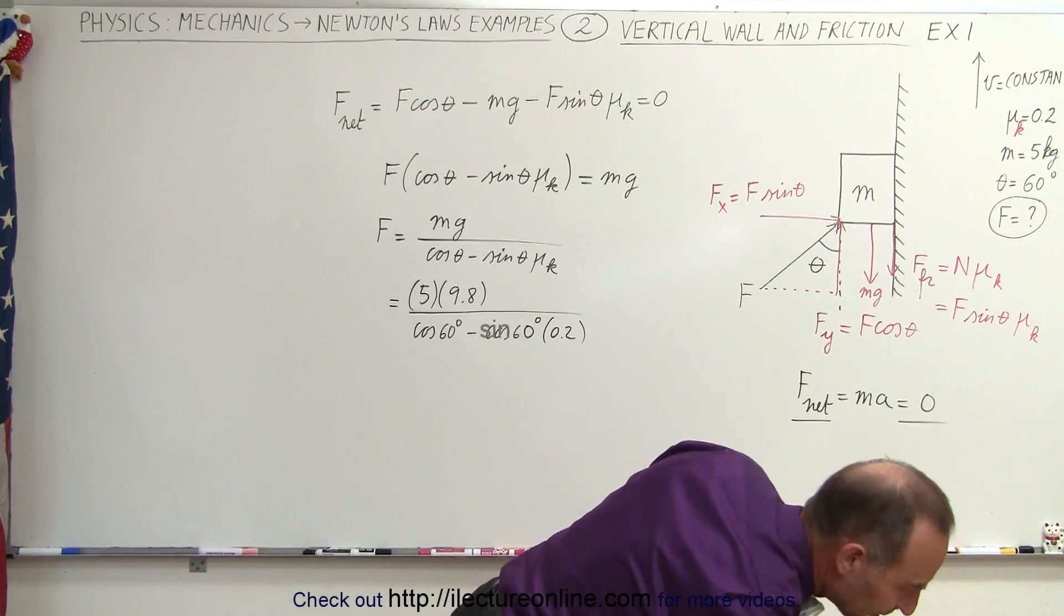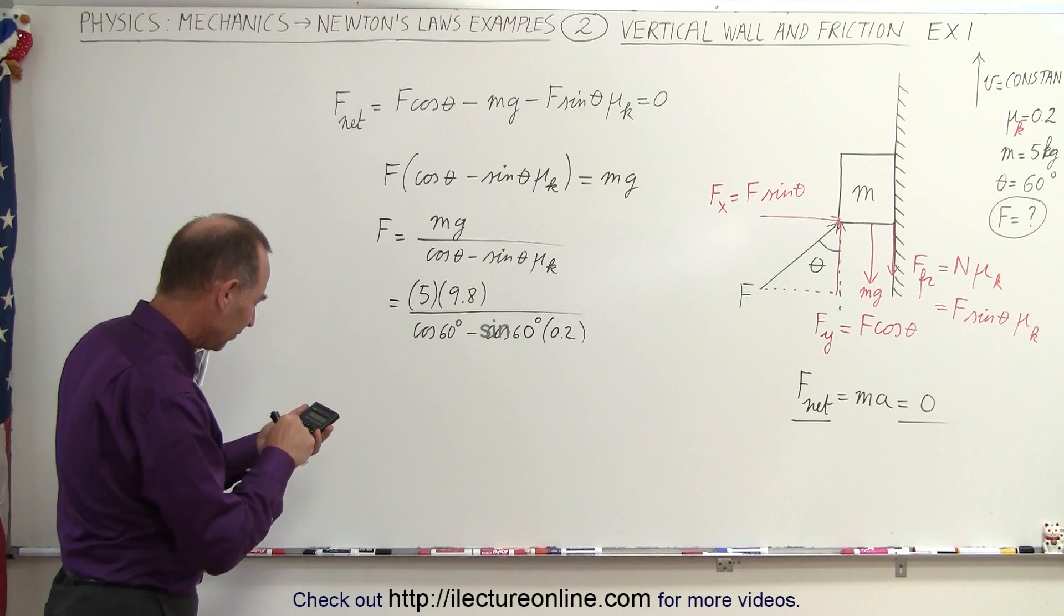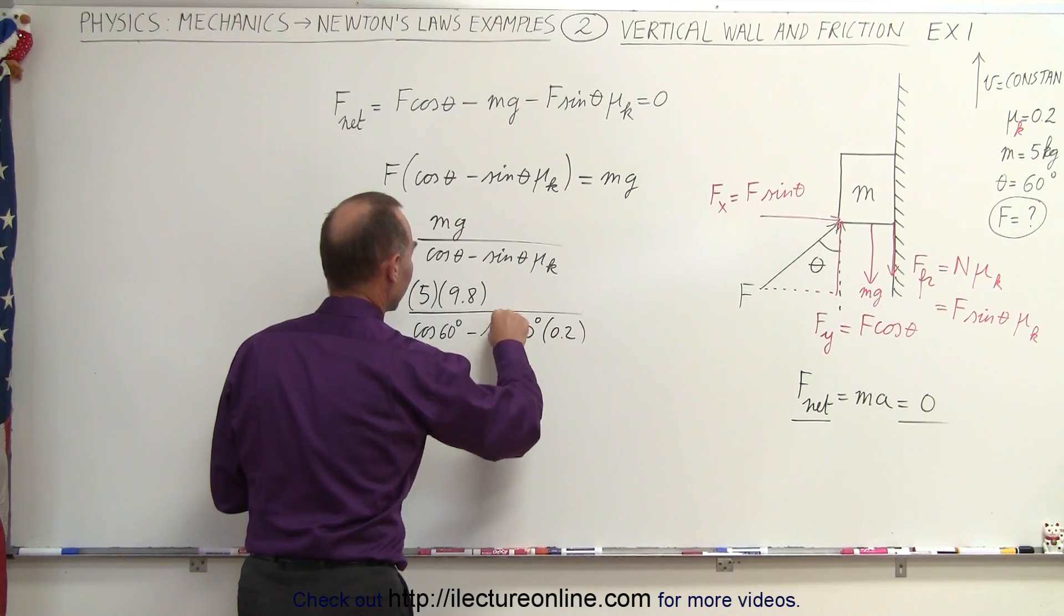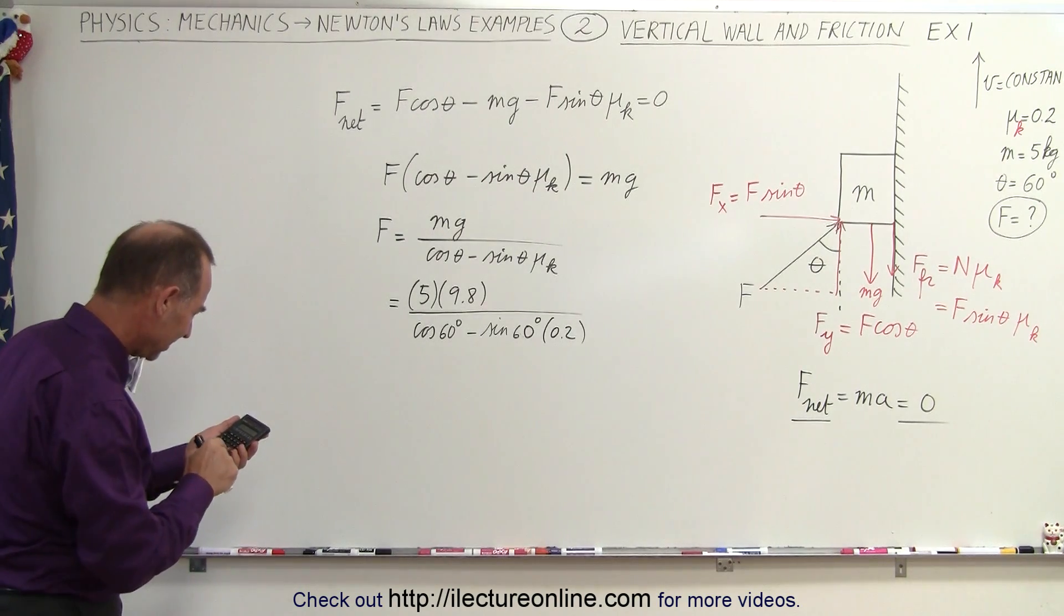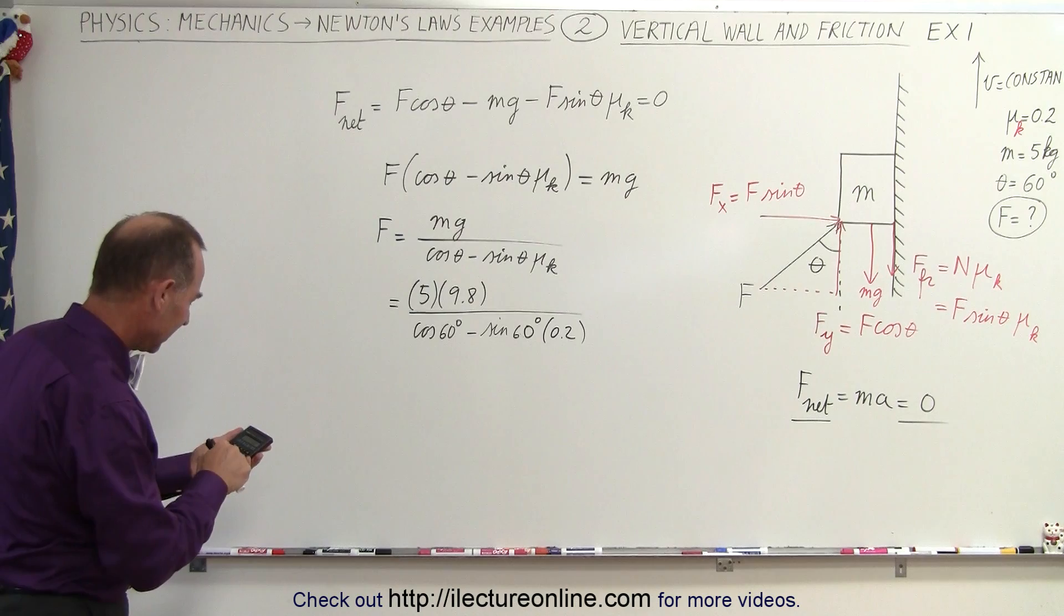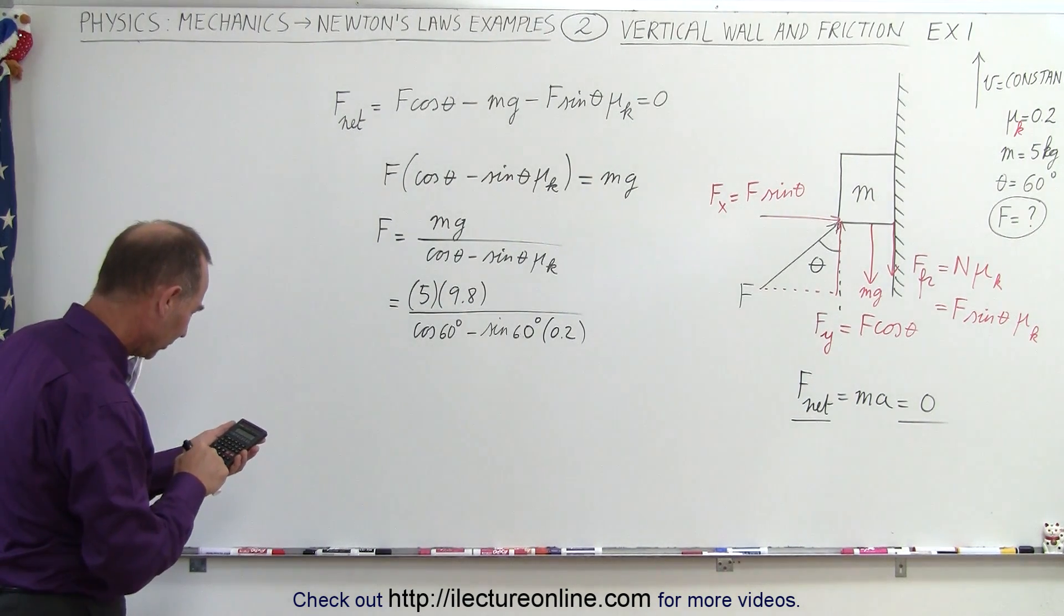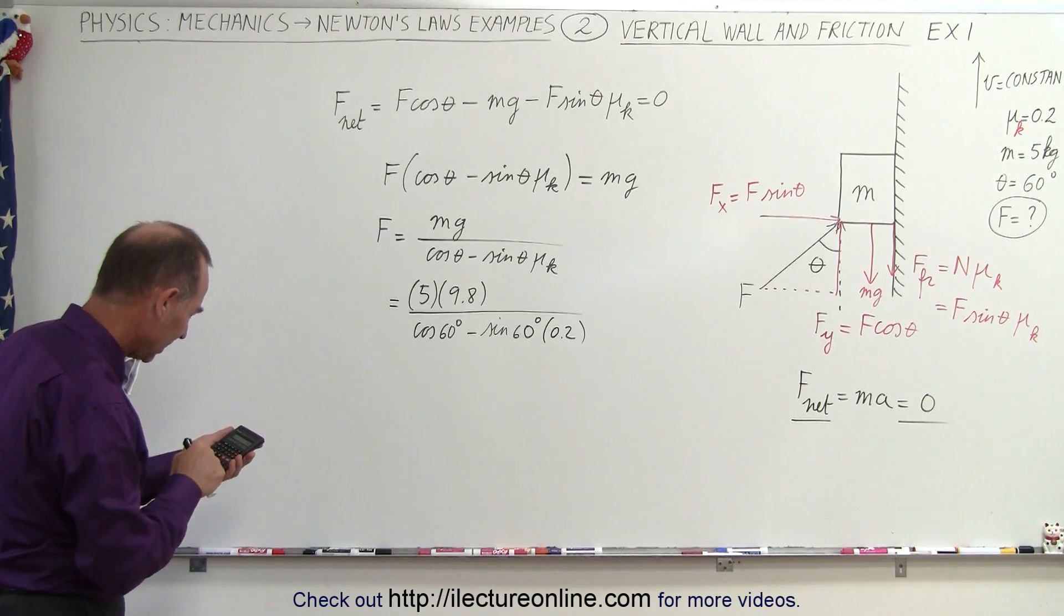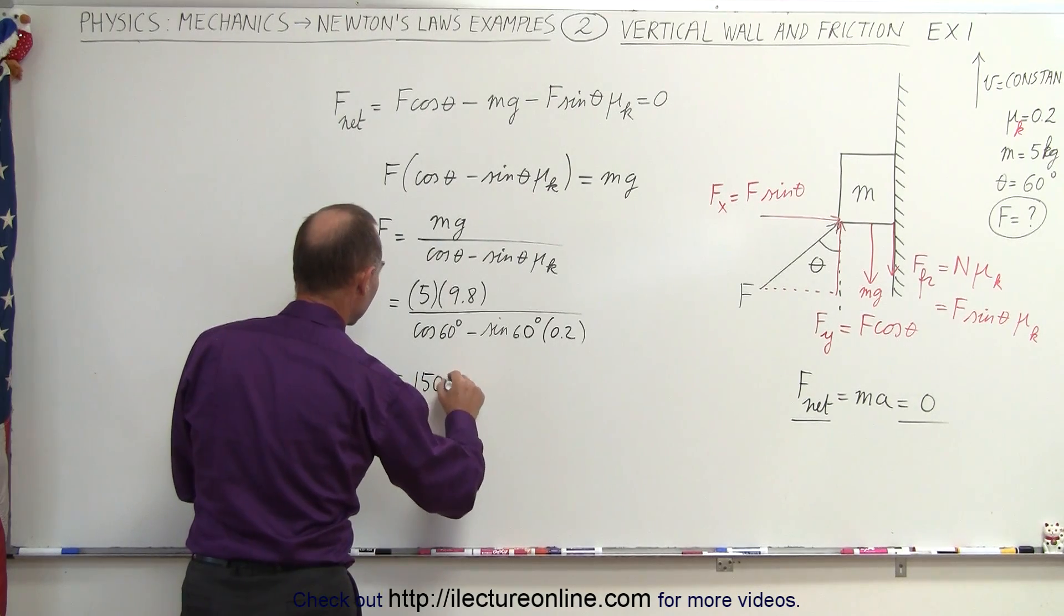All right, with the calculator, we should be able to figure out what that's equal to. So in the denominator, we have the sine of - wait a minute, that should be the cosine, that should be the sine. See, I have to pay attention because I will make mistakes if I don't pay attention to what I'm doing. So the sine of 60 times 0.2, and then we subtract that from the cosine of 60, which is 0.5, and then we bring that to the numerator, and we multiply that by 49, and we get a force of, let's see, let's round it off to 150 newtons.